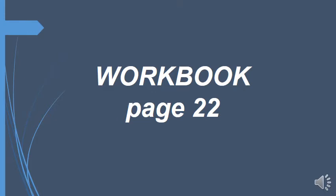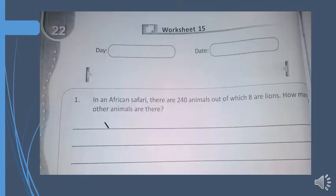I am counting for you all so that you don't need to panic — just do your work with me. I'm counting so that you can take out your copies: 1, 2, 3, 4, 5. I know you all have taken out your books now. So let's start. First, write the day and date properly. This is Worksheet 15 on page number 22, and we are going to solve it.